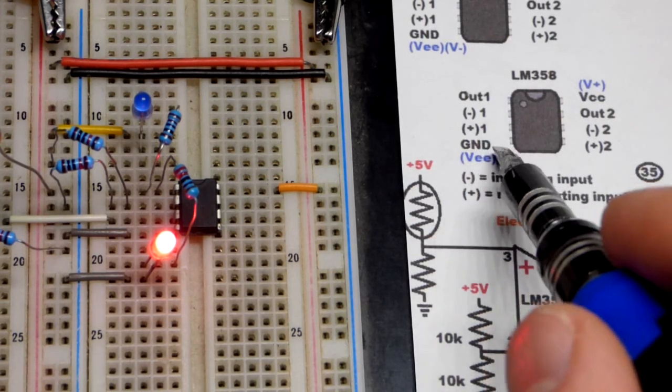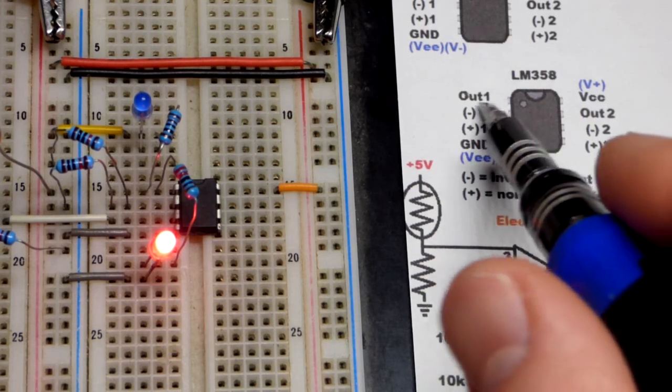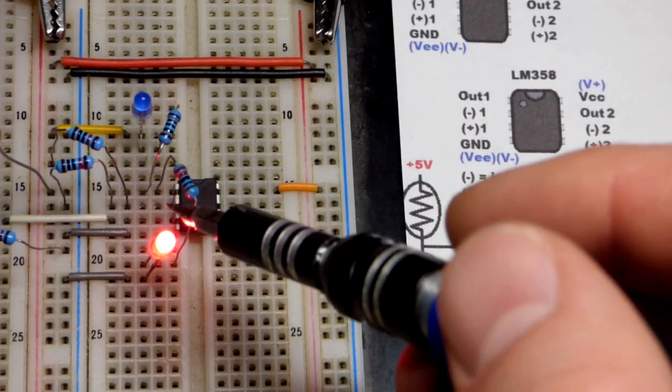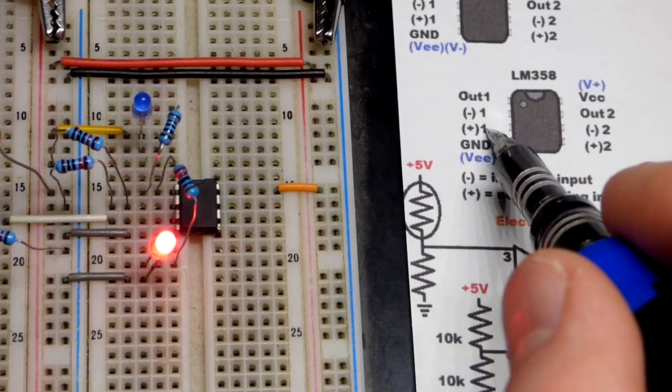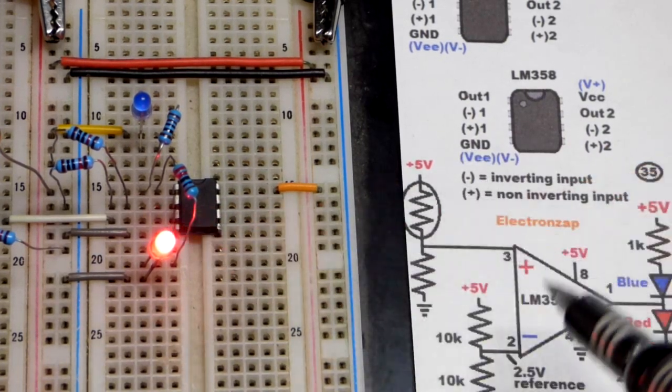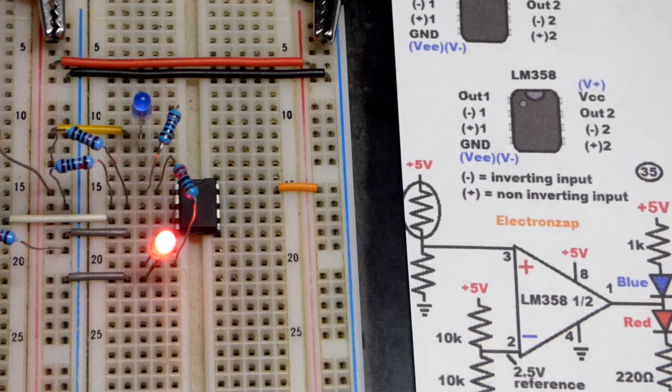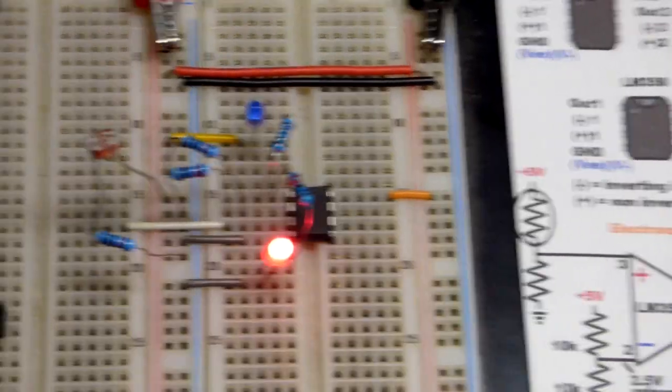We have the output on top, the inverting input below that (minus), and the non-inverting pin number 3 right there. I even wrote the pin numbers on there, and we will take a look at the actual circuit.